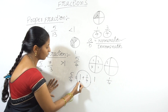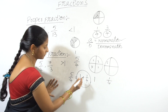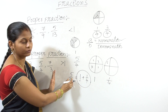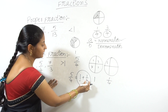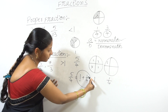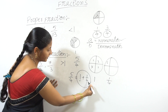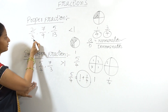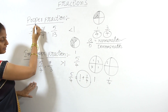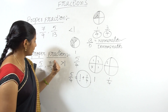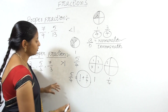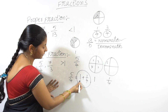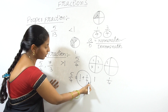This is the whole number part. 5 by 4 is equal to 1 plus 1 by 4. The improper fraction is the combination of a whole number and a proper fraction.